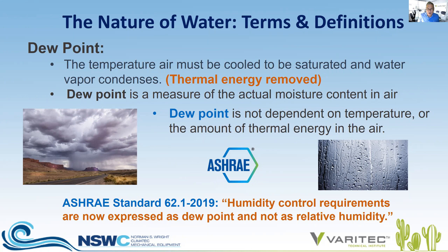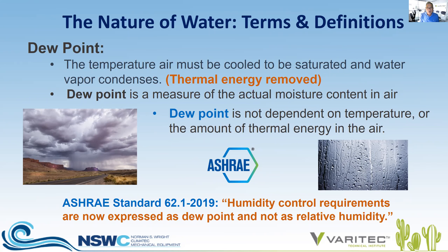ASHRAE 62.1 2019 states humidity control requirements are now expressed as dew point and not as relative humidity. I was always raised with relative humidity as a measure of the amount of moisture in the air — so why has ASHRAE moved away from it? Relative humidity is defined as a measure of water in the air in respect to the amount of water air can hold — 100% RH — at a given temperature.